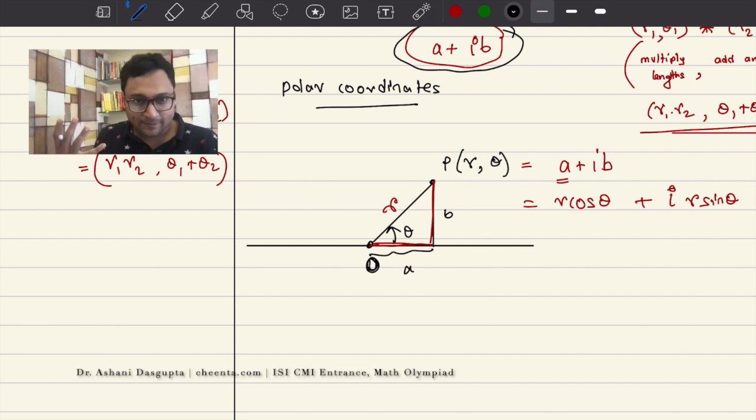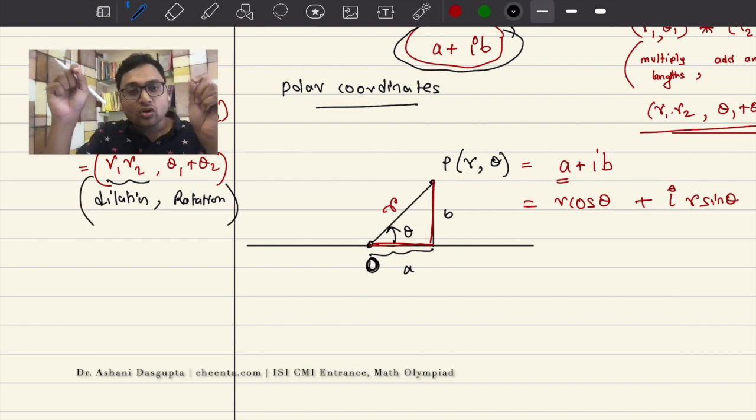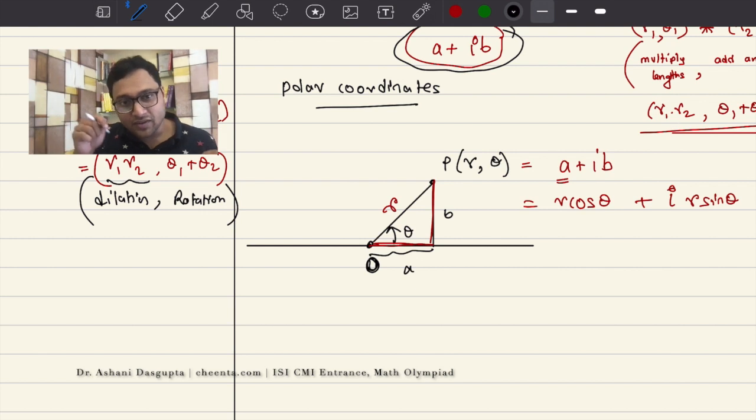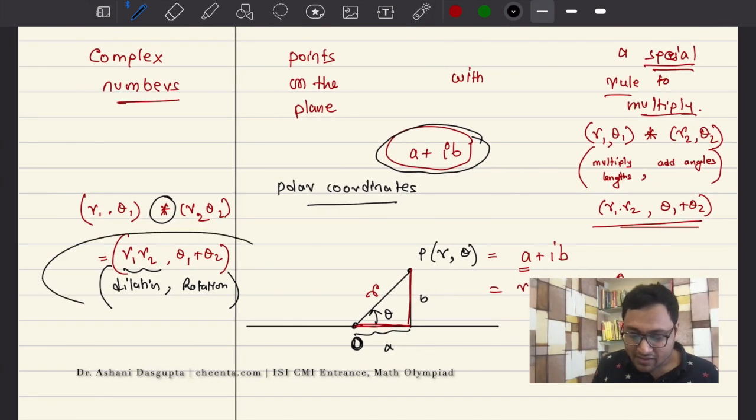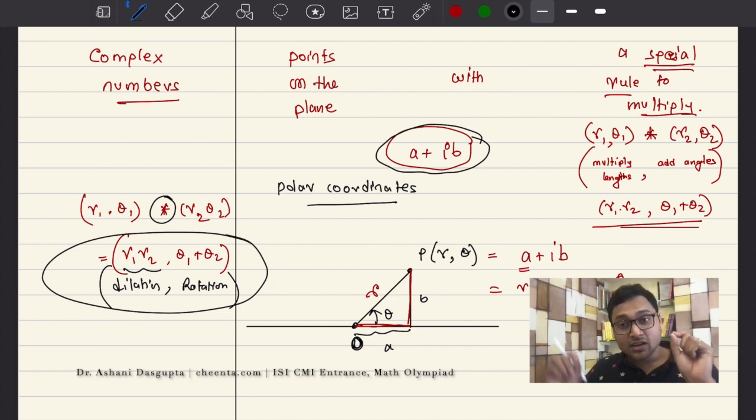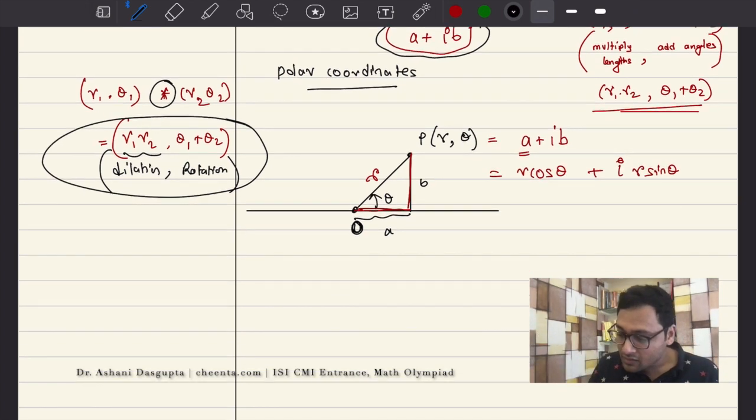I have discussed it in other videos that this operation also represents a very beautiful geometric function, a transformation. And what is it? It is rotation. You are adding angles. So, you are rotating, right? You are adding angles theta1 to theta2. So, you are basically rotating one of the points by another angle. And this is dilation. Dilation means you are extending or contracting the length by a factor of R2. I have discussed it in other videos. I will put the link in the description for those. Complex numbers have beautiful geometric significance. But let's not go too much into that right now. So, we just have this particular description of complex multiplication and we will use it to connect it with the notion of inversion.